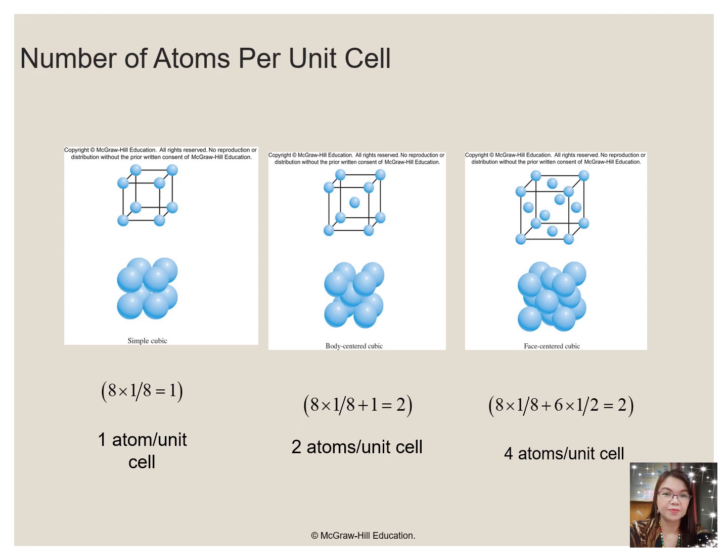This slide tells us the summary of the number of atoms per unit cell: on a simple cubic, which is equivalent to 1; on a body-centered cubic, which is equivalent to 2 atoms per unit cell; and for a face-centered cubic, which is equivalent to 4 atoms per unit cell.